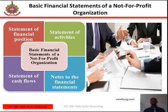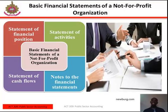The first statement is the statement of financial position — what many accountants would refer to as a balance sheet. The statement of financial position provides a snapshot of a not-for-profit organization's assets, liabilities, and net assets. When presenting a complete set of financial statements in accordance with GAAP, the statement of financial position should be prepared as of the organization's fiscal year end.